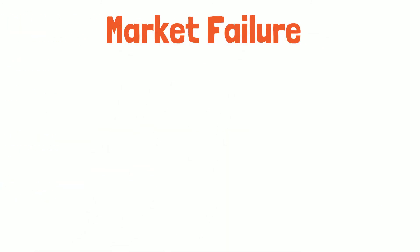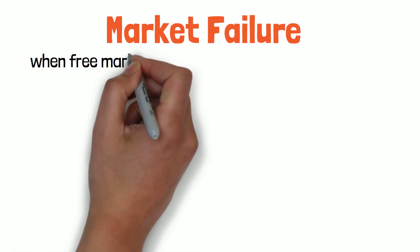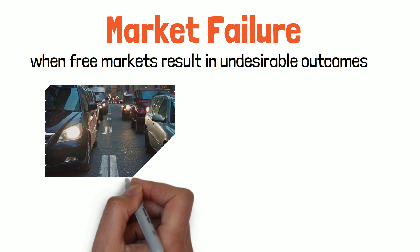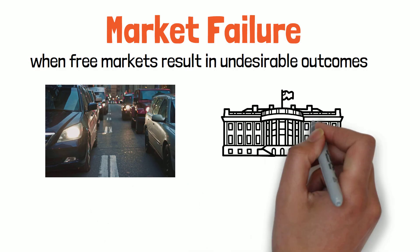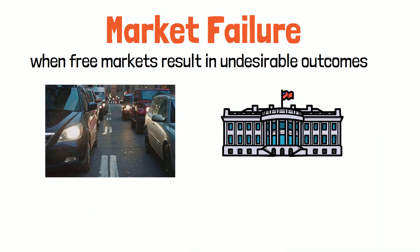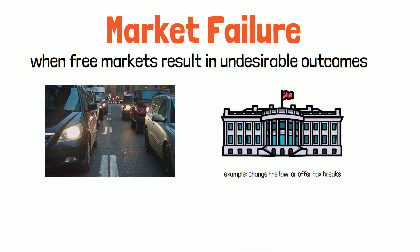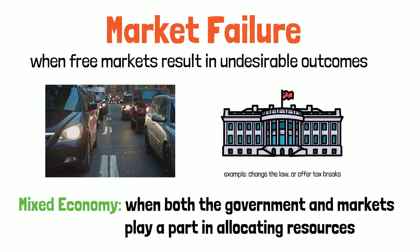4. Market failure — a market failure happens when free markets result in undesirable outcomes. For example, traffic congestion is seen as a market failure. 5. Governments often intervene when there's a market failure. They might change the law, or offer tax breaks, or create some other kind of incentive to try to influence people's behavior. Governments can also intervene in the economy by buying or providing goods or services. When both the government and markets play a part in allocating resources, this is called a mixed economy.